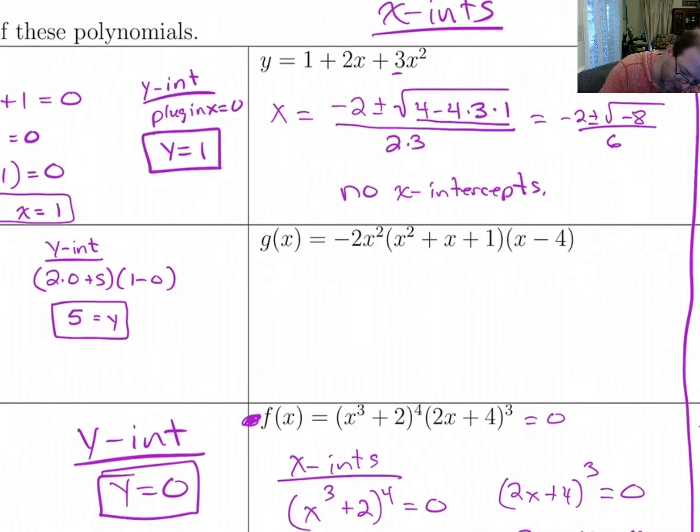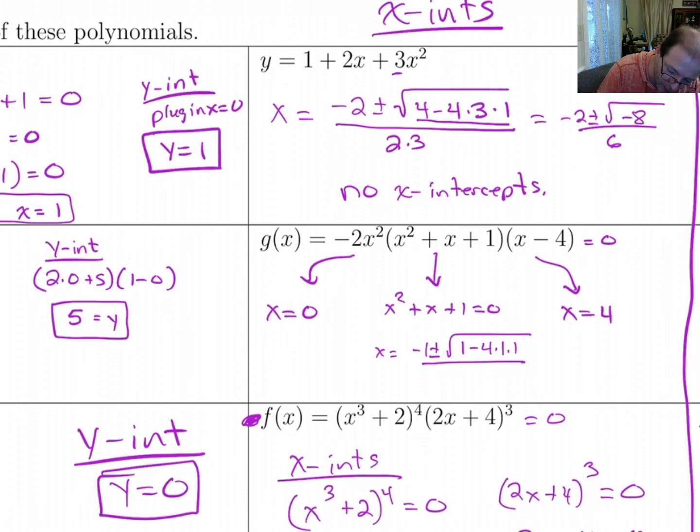Alright. Now this last one, we'd set each one of these things equal to zero individually to get our zeros. This one would give us x = 0. This one would give us x = 4. This one though, if we tried to solve it, by setting x² + x + 1 = 0, and using the quadratic formula, I'm going to do b² - 4ac over 2a, I wind up getting no solution, or no real root, because that's negative. So the only x-intercepts we get are 0 and 4.